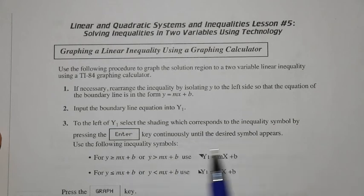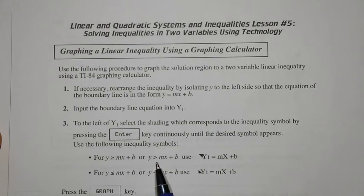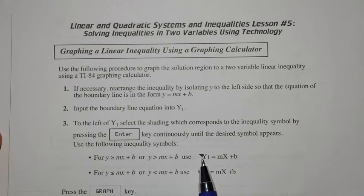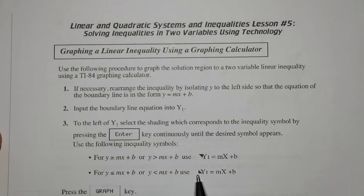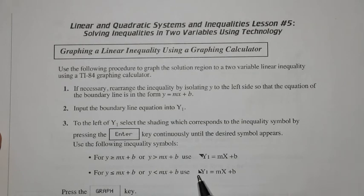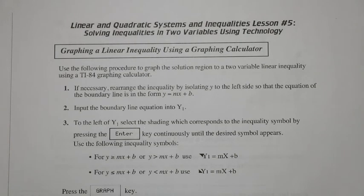There are different options available. If y is greater than or equal to mx + b, or y is greater than mx + b, we use the symbol showing an upper shaded triangle to the left of y1. If y is less than or equal to mx + b, or y is less than mx + b, we use the lower version — the shaded triangle pointing toward the bottom. Then we press the graph key, just like we would for a linear equation.